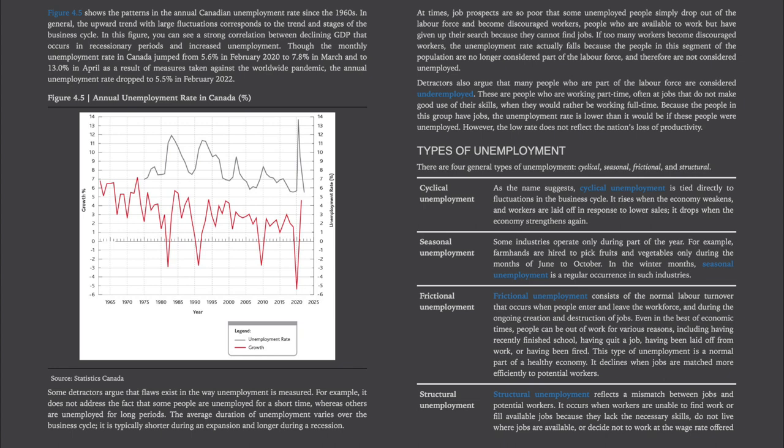Types of unemployment. There are four general types of unemployment: cyclical, seasonal, frictional, and structural. Cyclical unemployment is tied directly to fluctuations in the business cycle. It rises when the economy weakens and workers are laid off in response to lower sales. It drops when the economy strengthens again.